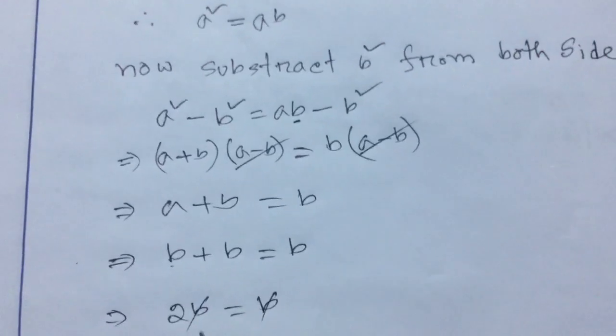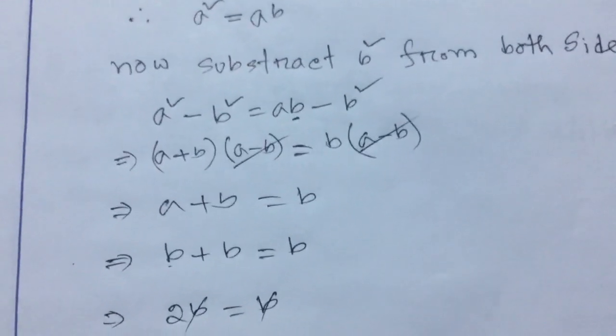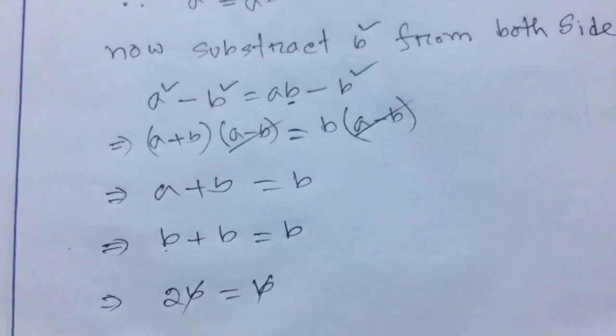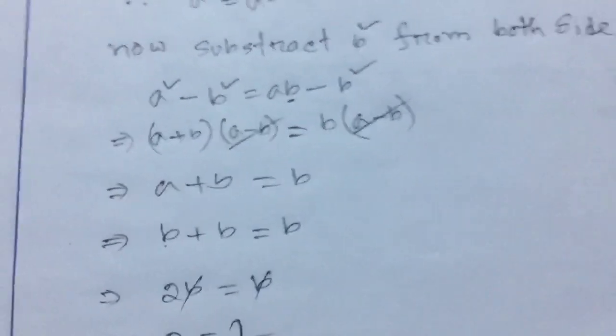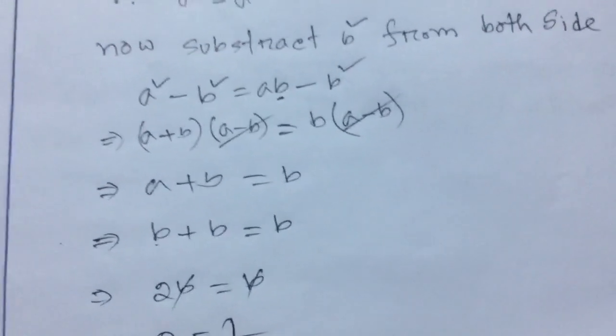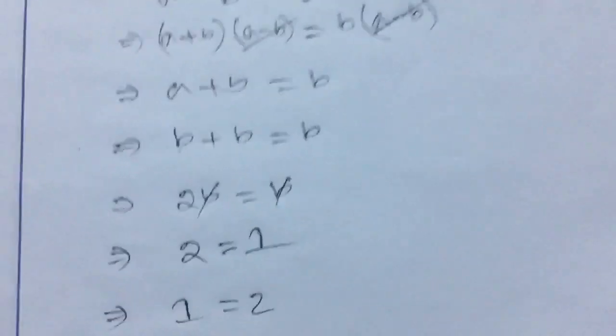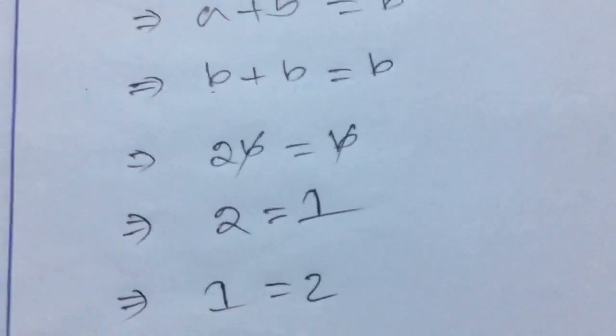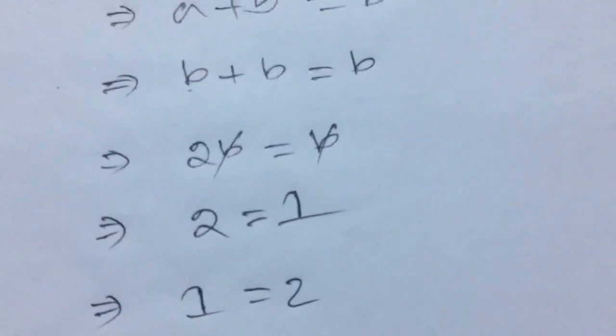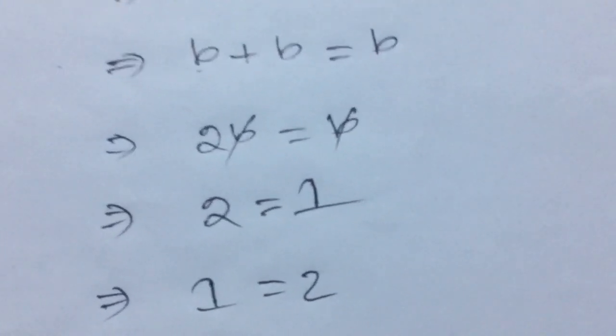We can cancel b. 2 equal to 1, or 1 equal to 2. So here we prove 1 equal to 2.